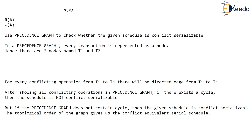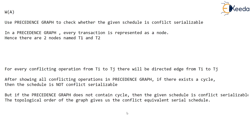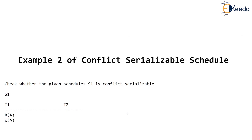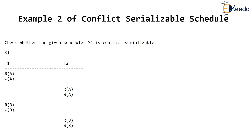I will also tell you about the topological order of the graph and what it is called — that's another interesting thing you can get from these examples. There are many more examples of conflict serializability we will see. Let's meet in the next video. Thank you very much.